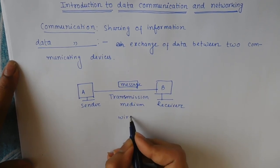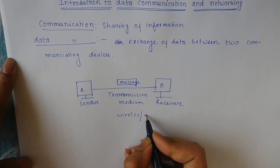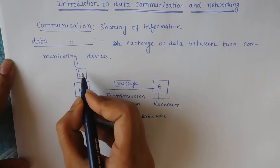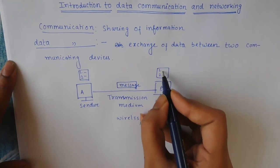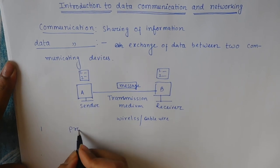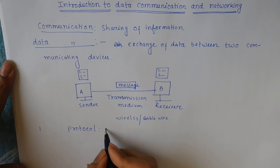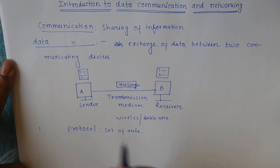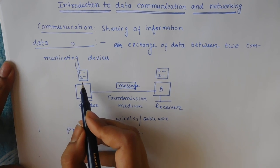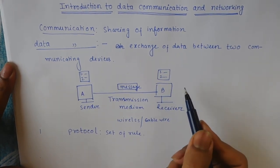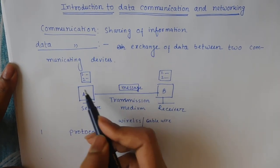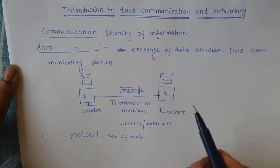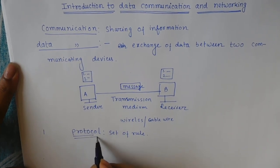The transmission medium may be wireless or through a wire cable. Most importantly, there should be a protocol in both sender and receiver. Protocol means a set of rules — if we use an encoding algorithm in the sender, there must be a decoding algorithm in the receiver, or if there is an encryption algorithm in the sender, there is also a decoding algorithm at the receiver end. This is an agreement between sender and receiver.